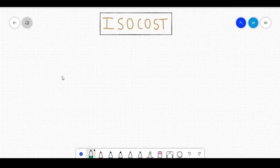In this lecture, we try to understand what we mean by the ISO cost curve. In economics, there are three economic agents that we generally try to understand.